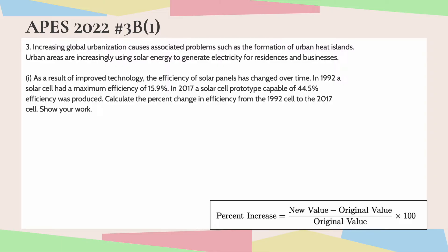As a result of improved technology, the efficiency of solar panels has changed over time. In 1992, a solar cell had a maximum efficiency of 15.9%. In 2017, a solar cell prototype capable of 44.5% efficiency was produced. Calculate the percent change in efficiency from the 1992 cell to the 2017 cell. Show your work.